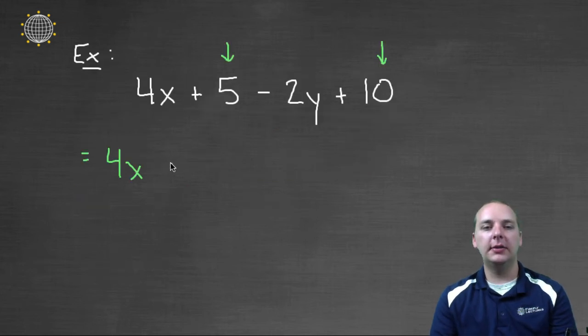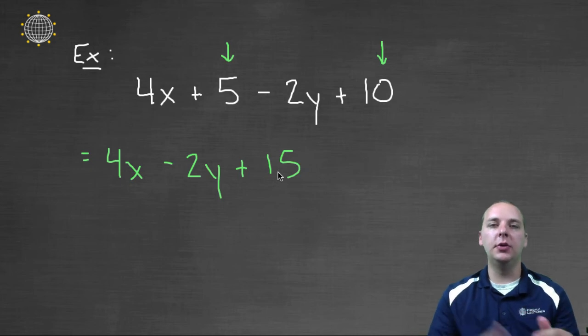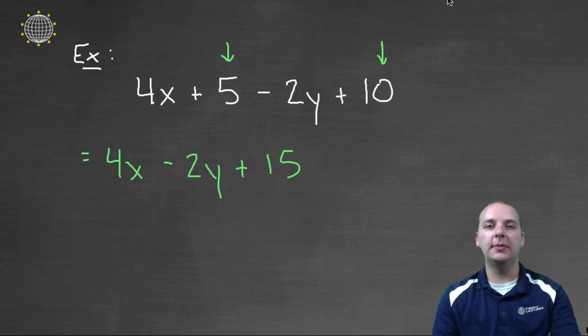So we'll have four x minus two y plus five plus ten, that makes plus fifteen. So if you have like terms, you can combine those guys together. So we'll be using like terms and coefficients heavily throughout the rest of the semester, and I hope this was a good introduction to help you better understand coefficients and like terms.